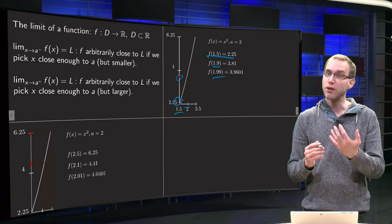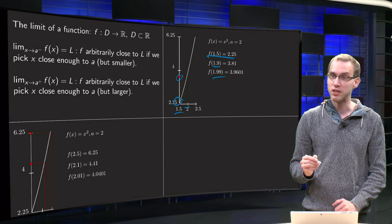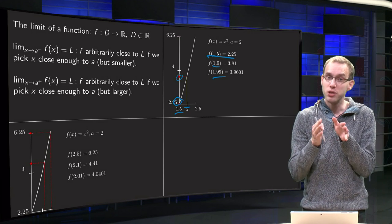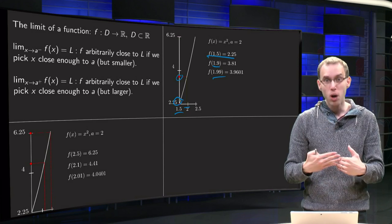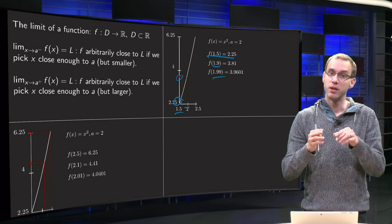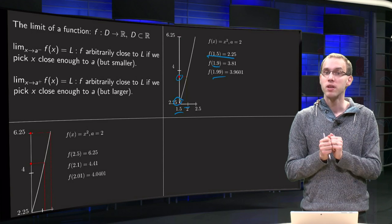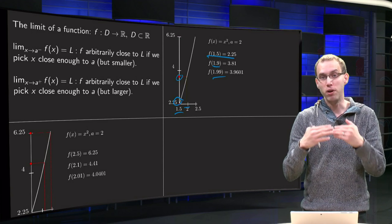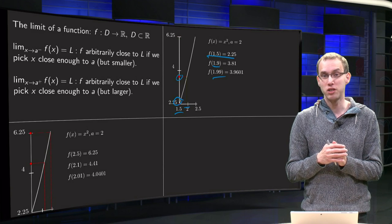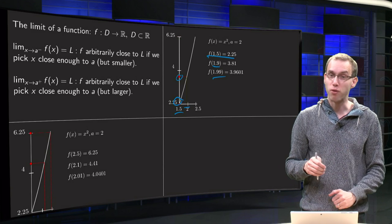And the function value equals 3.9601. And you see, we are below x equals 2, and we get arbitrarily close to 4. So the limit also coming from below for x going to 2 equals 4.